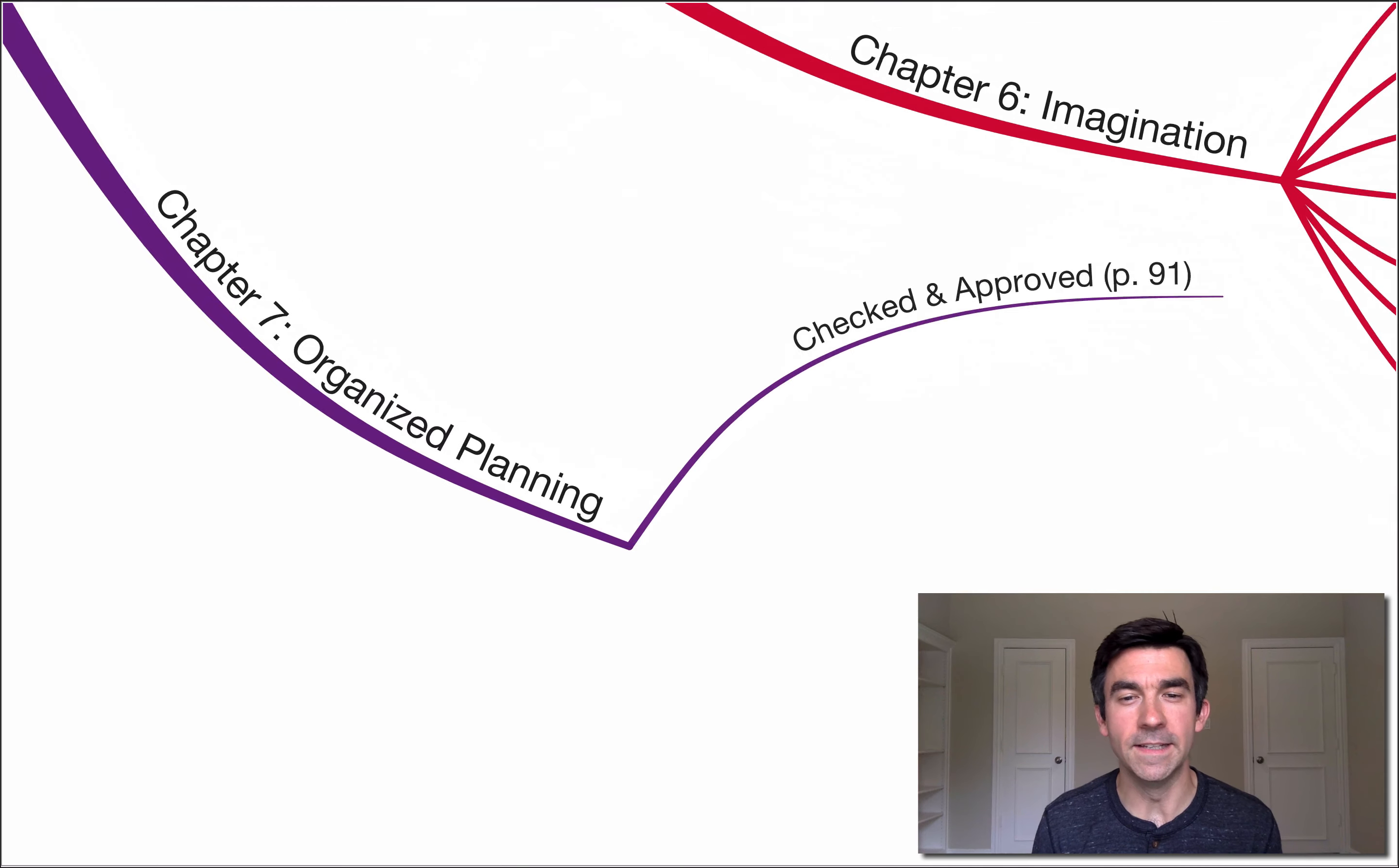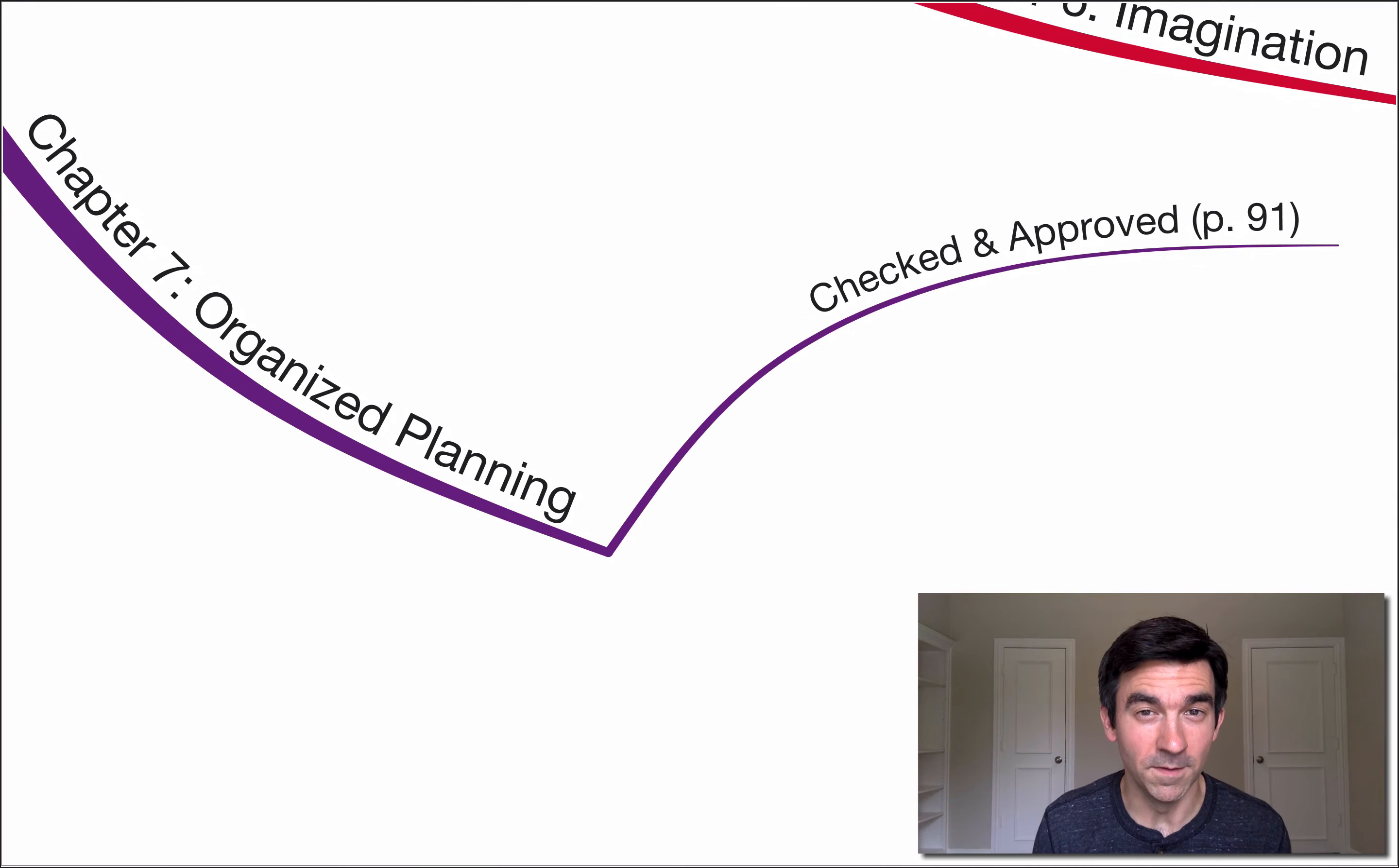So it's one of the longer chapters, about 30 pages or so. A few tangents along the way, a little bit of information that maybe no longer is relevant to us, but let's go through it and talk about some of the key points. First key point here is checked and approved. Now this is a big one. I'm on page 91. Napoleon says that no individual has sufficient experience,